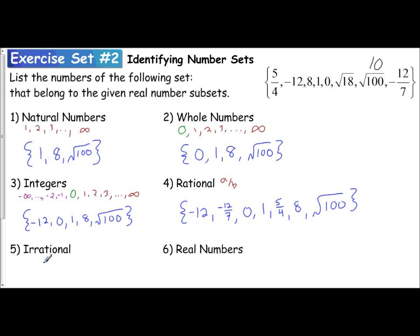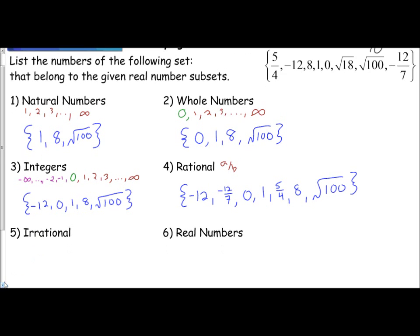Last, I have my irrational numbers. Here's the interesting part. If you have a rational number, there's no way it can be irrational. So what's the only number in this list that we have not placed in our rational number set? That is the square root of 18, because that is a non-repeating, non-terminating decimal. So that is the only irrational number.